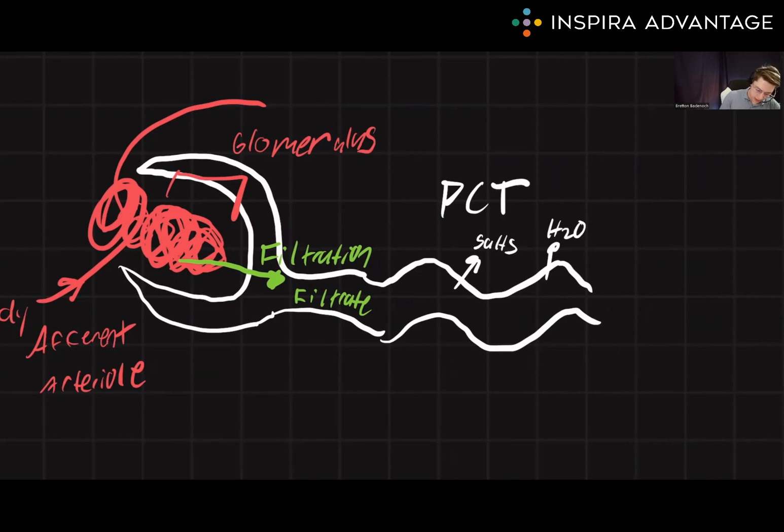So, if I extend this other artery out here, this is actually covering all of the kidney, and we call this the efferent arteriole. This covers the whole kidney, and these water and salts are all directly going into this efferent arteriole through a process called reabsorption.